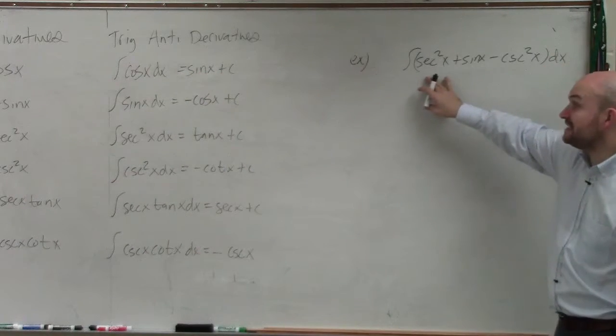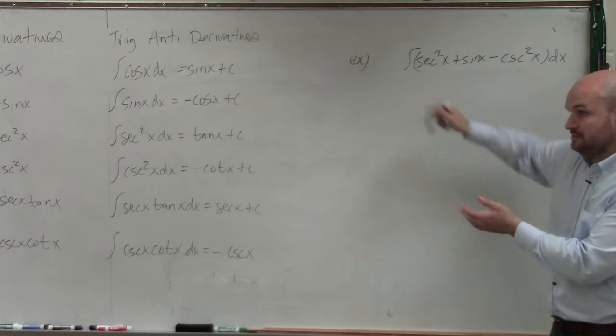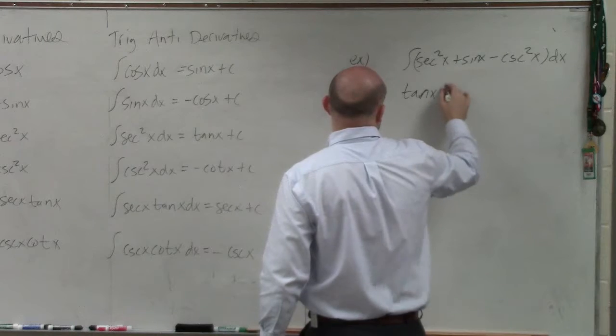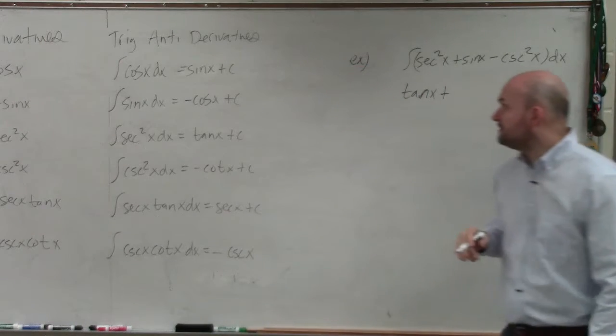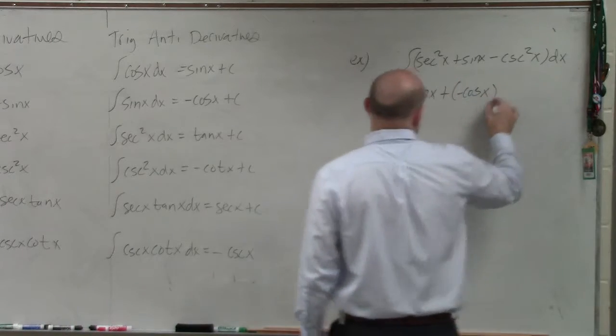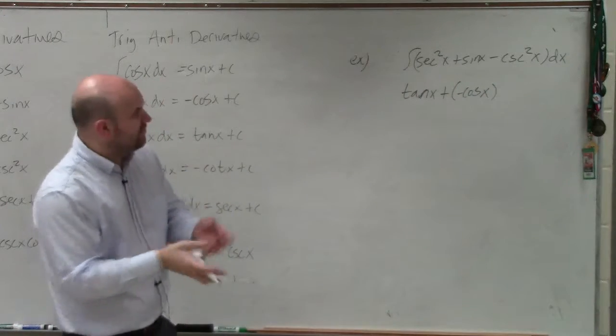So we know the antiderivative of secant squared is going to be tangent of x plus the antiderivative of sine is going to be a negative cosine of x. And you can put them in parentheses here first before forgetting about the sine.